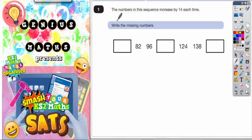Question number one: the numbers in this sequence increase by 14 each time. Write in the missing numbers. So it's going up by 14, so every time we go to the next number from this box to this box, we're adding 14.